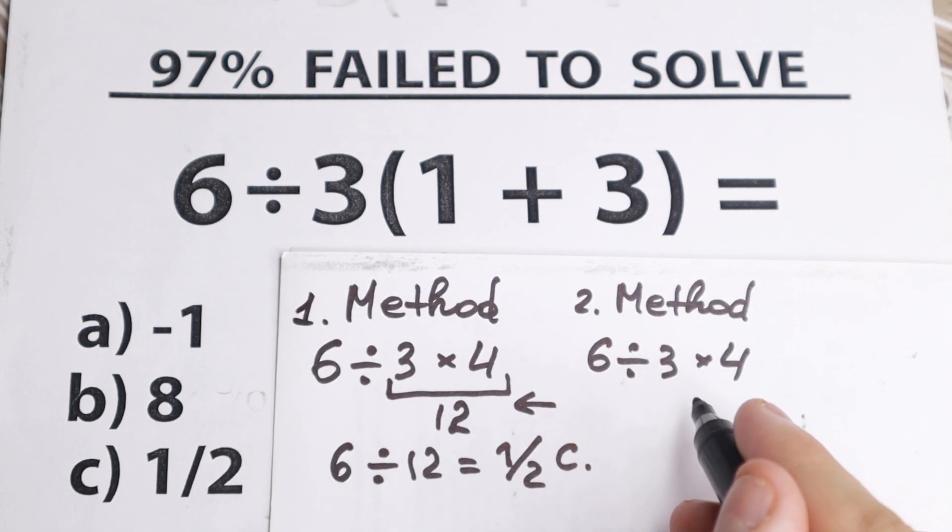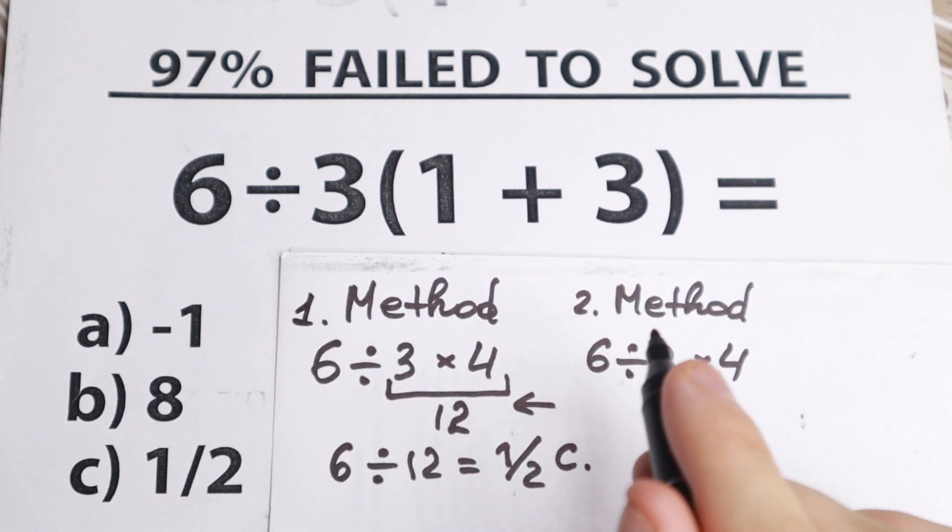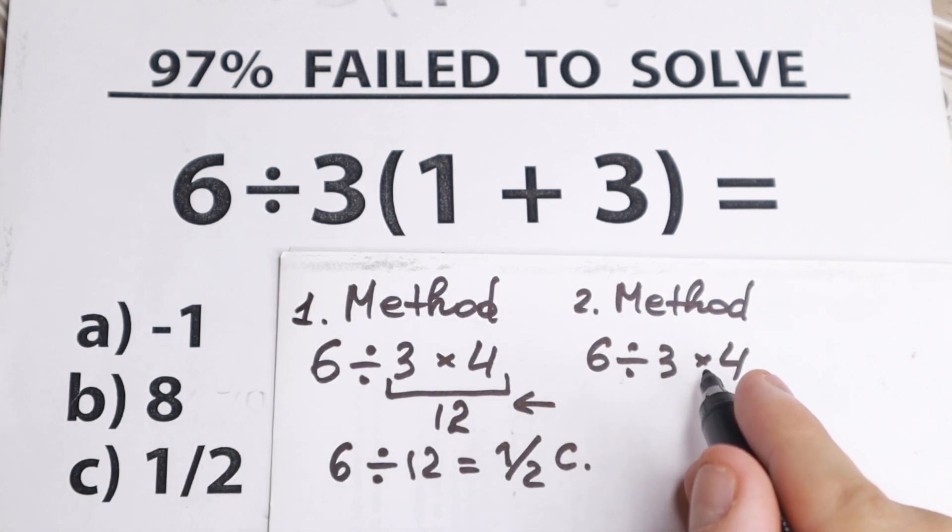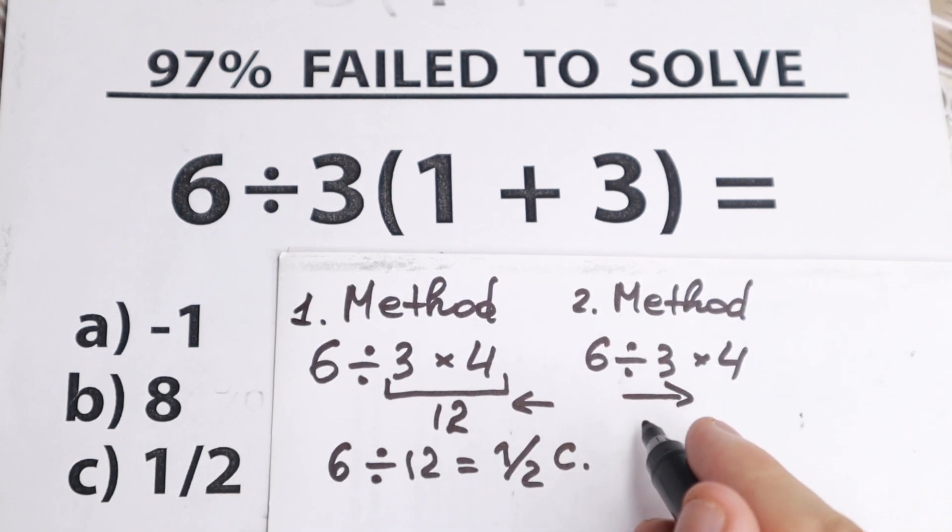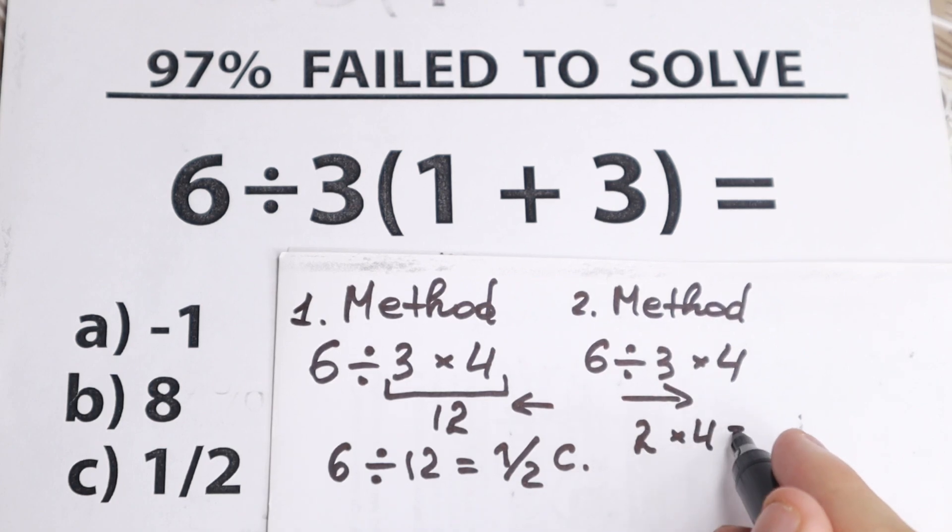Because we don't have multiplication, we don't have addition and subtraction. We have division and multiplication only. And this is the main moment right here. If we have division and multiplication, we need to go from left to right. We have 6 divided by 3 equals 2. And 2 times 4 equals 8.